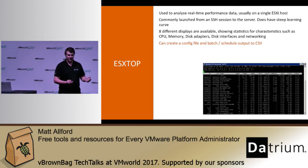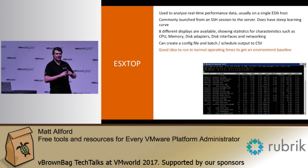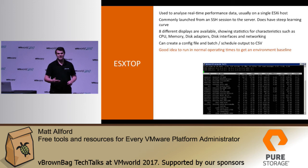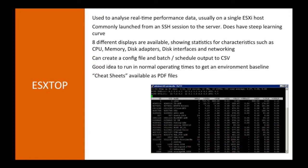If your issue happens again, you've got the data there — you're not trying to stare at the ESXTop screen while the issue is occurring. It's also a good idea to run ESXTop during normal operating times to get a baseline of your environment. If you've got an issue and you're not sure what a metric looks like when things are working normally, grabbing a baseline every three to six months means you can compare against it. There are also cheat sheets available as PDFs that show the top three or four key performance metrics for each major component.